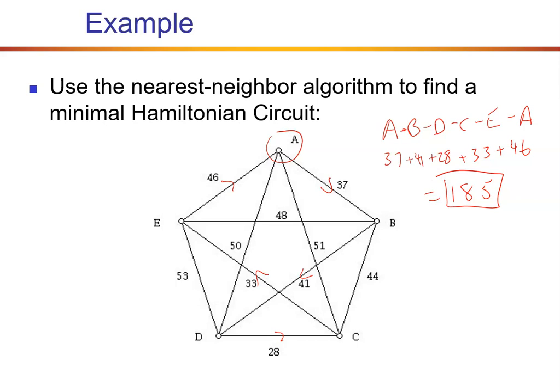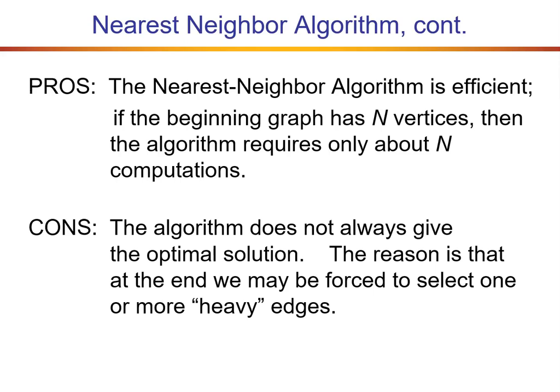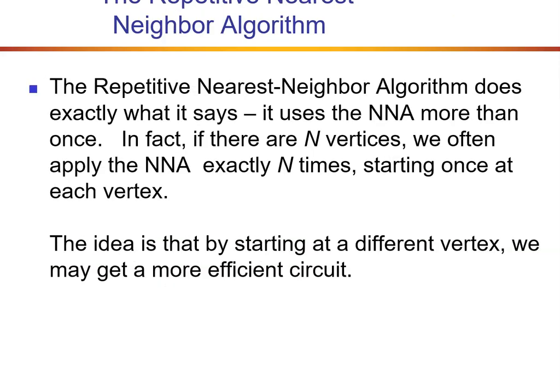Is that optimal? Well, that's a great question, because I just picked A to start with. Could we start with E, B, or C? Would that change our weighted graph result? We'll answer that. The pros of nearest neighbor: it's efficient — the algorithm requires about N computations for a graph with N vertices. The con: it does not always give you the optimal solution, because at the end we may be forced to select one or more heavy edges.